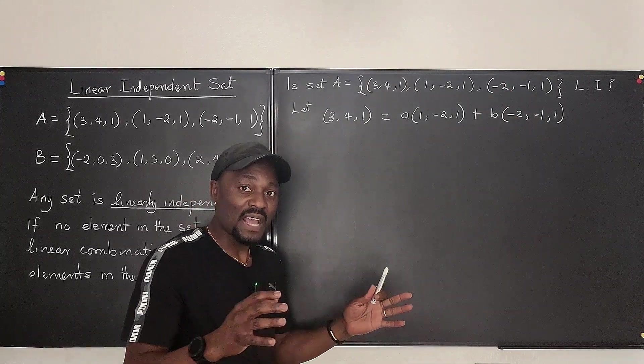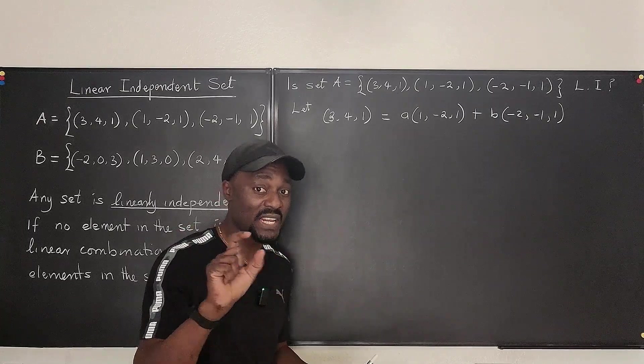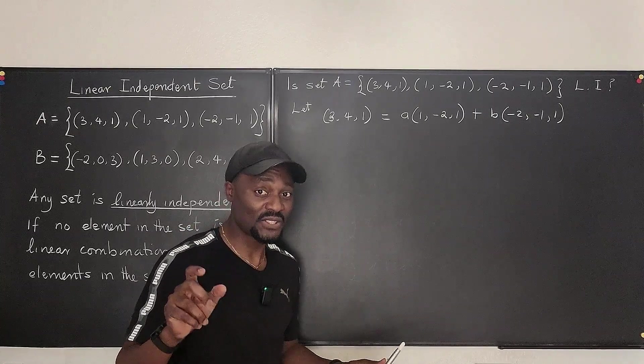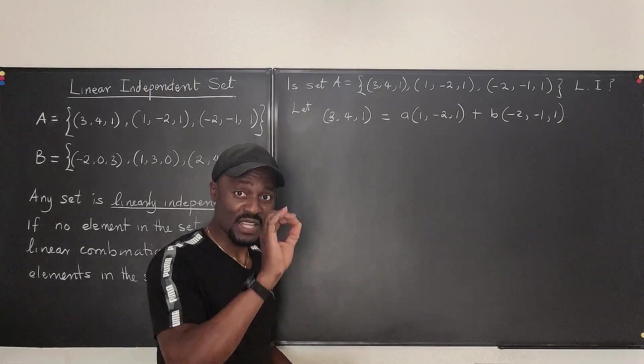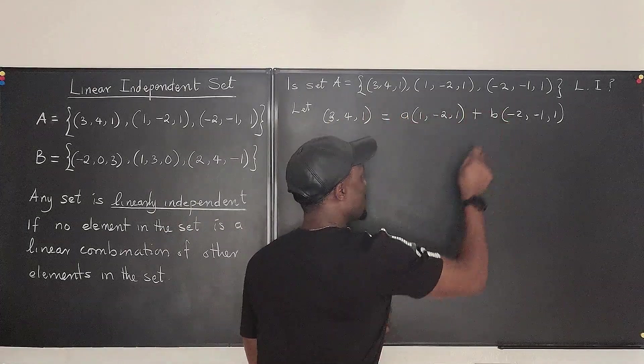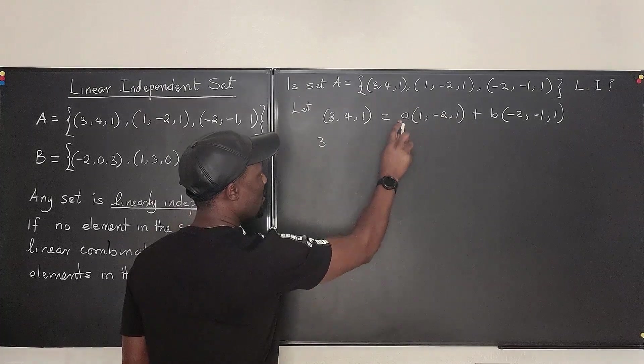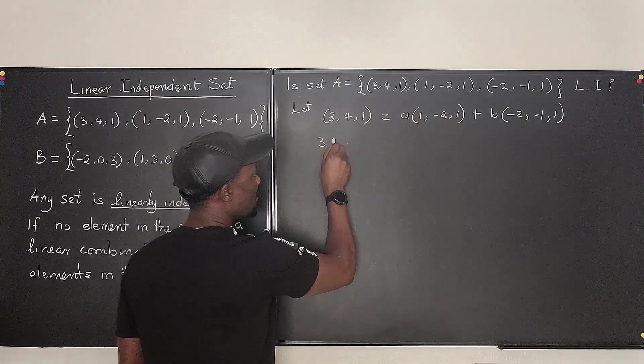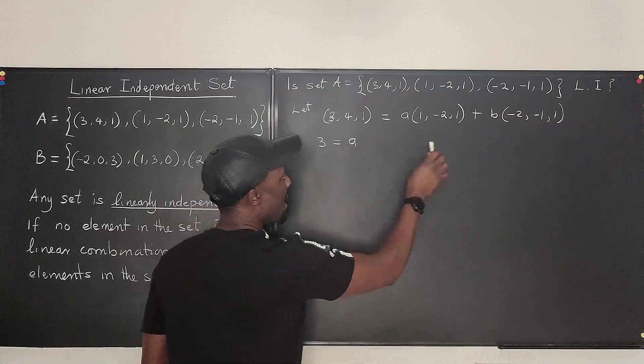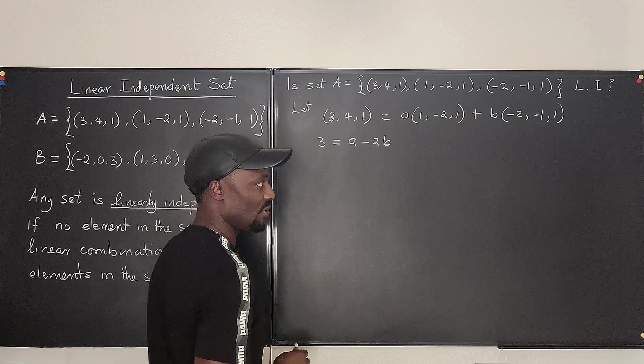Now, because we're dealing with vectors or matrices, you have to deal with corresponding entries. Remember when you're adding matrices or vectors, you have to look at the corresponding entries. So the first here corresponds to the first, corresponds to the first. So we're going to say that 3 corresponds to A times 1, which is going to be equal to A, plus B times minus 2, that's minus 2B. That's your first equation.